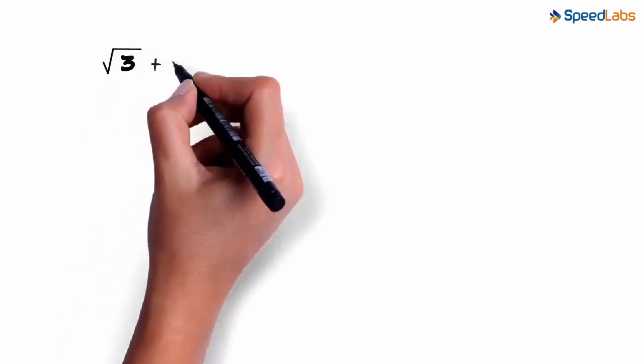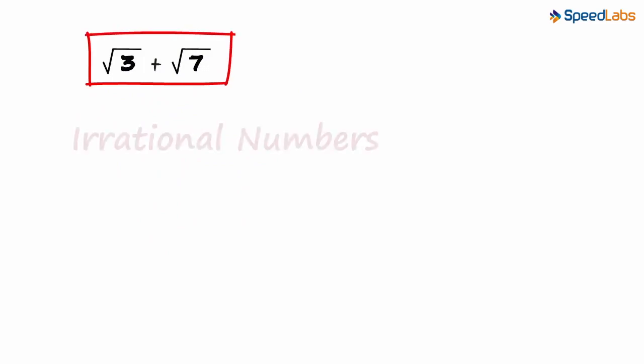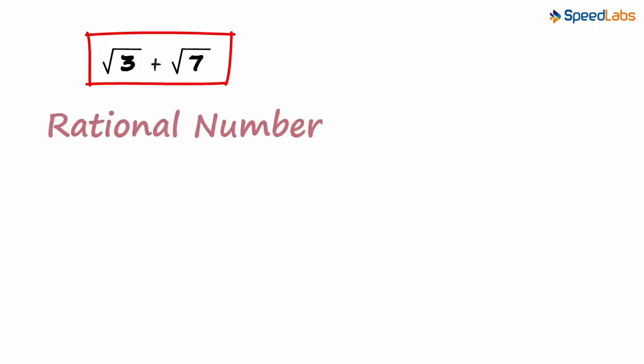How do we rationalize something like √3 plus √7? This is actually a sum of two irrational numbers. What do we multiply this with to get a rational number?